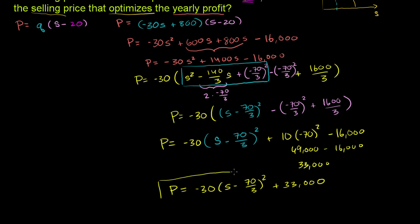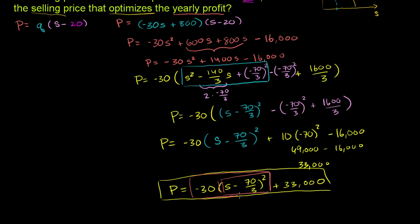When is this maximized? The term (s - 70/3)² is always non-negative, so when multiplied by -30 it's always non-positive. The profit takes its highest value when that expression equals 0, which happens when s = 70/3.